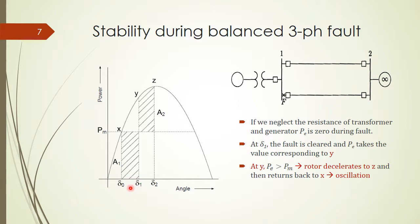And we assume that at delta_1, the fault is cleared, and P_e takes the value according to this position, which is P_max times sine delta_1. Suddenly, we have the situation where P_e is higher than P_m. So the rotor decelerates to Z here because now we still have the speed of the rotor, so it slows down and stops here at Z. And then it will return to X, and then we have the system oscillating around X.